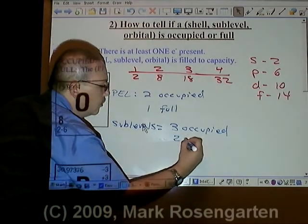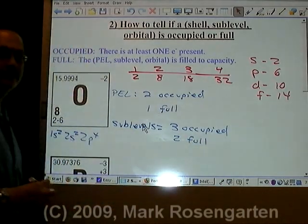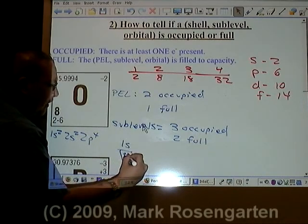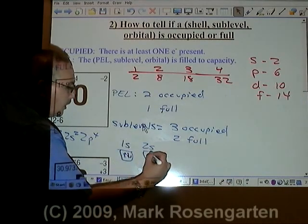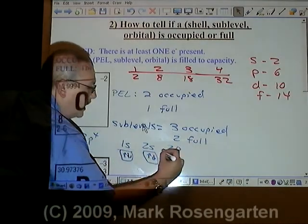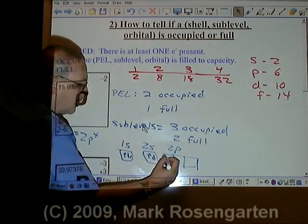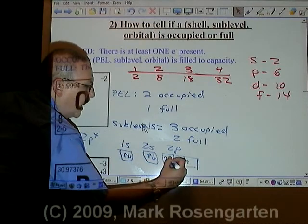When we draw the box diagram of this, we draw 1s up-down, 2s up-down, 2p three boxes, four electrons: one, two, three, and four.